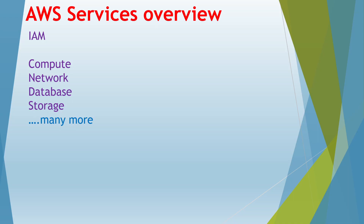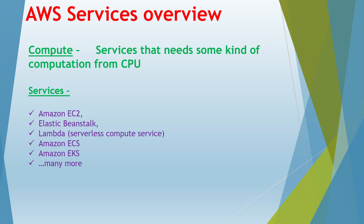Now let's move on to compute. There are more than 200 plus services available in AWS and they are clustered into different groups. Let's talk about the compute group — services that need some kind of computation from the CPU, which provides processing power. Whenever you need a service that requires processing from the CPU, those services are grouped in the compute module.